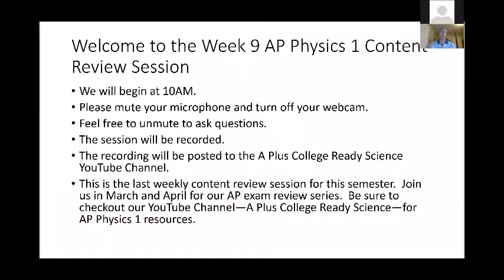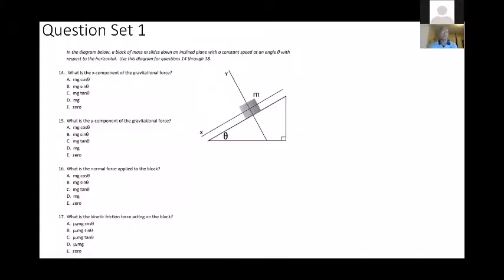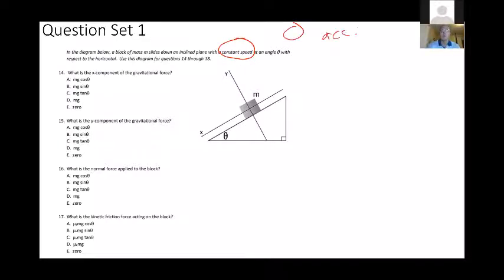Today we're going to review dynamics and hopefully get you ready for your exam on unit 2. Here's a sample problem: we have a block of mass M sliding down an inclined plane at a constant speed. That's an important word — constant speed — which means zero acceleration and zero net force acting down the plane.